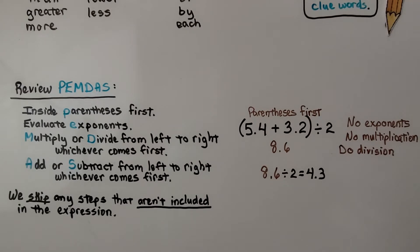So to review PEMDAS, we do inside parentheses first. That's the P. Then we evaluate exponents. That's the E. We multiply or divide from left to right, whichever comes first. That's the MD. And then the A and the S are add or subtract from left to right, whichever comes first. So it's not that this is the exact order. It's that we multiply or divide whichever comes first from left to right. Then we add or subtract whichever comes first from left to right. And we skip any steps that aren't included in the expression.